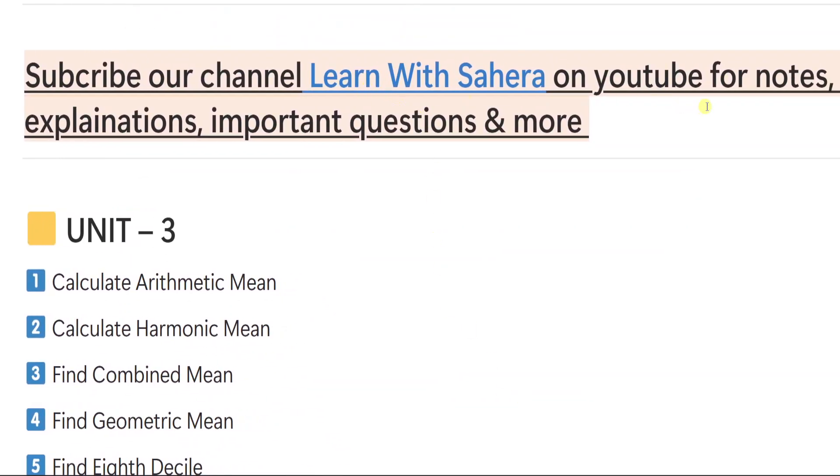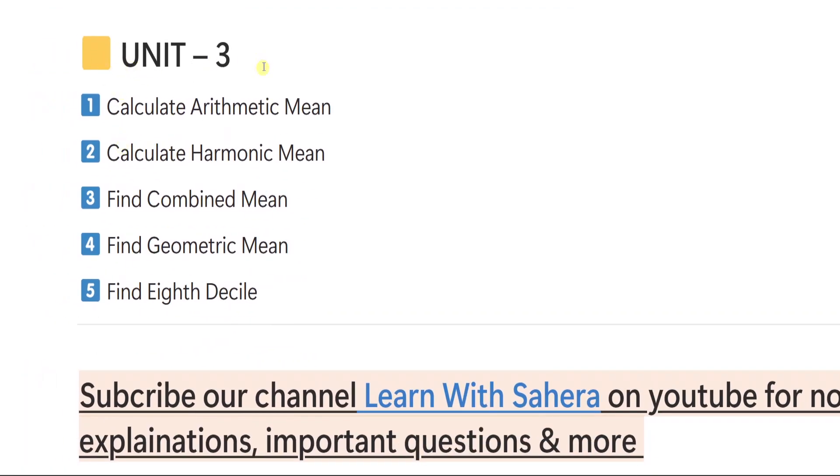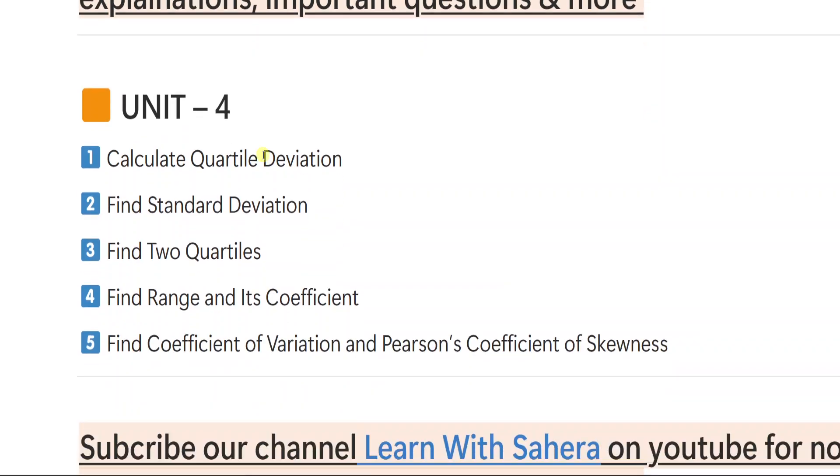Subscribe our channel, Learn with Sahira on YouTube for more videos. So let us see unit number 3. From unit number 3, you will be getting only problems. No theory will be given. Calculate arithmetic mean. Calculate harmonic mean. Find combined mean. Find geometric mean. And five, find eighth decile. So these are the five important questions from unit number 3. There is no theory in short important questions.